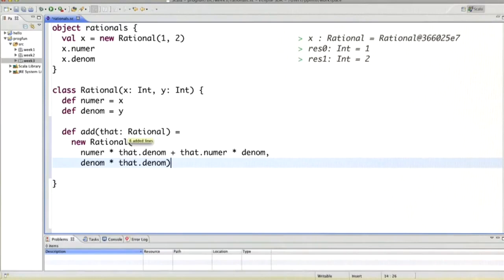One thing important here is that the addition function takes only a single parameter, not two. Where is the other one? Well, the left operand of add is really the rational number itself, the rational number for which we define the class.